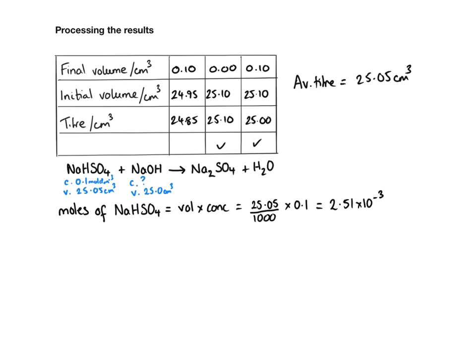From the equation, we can see that one mole of sodium hydrogen sulphate reacts with one mole of sodium hydroxide. So the moles of sodium hydroxide are the same as the moles of sodium hydrogen sulphate.